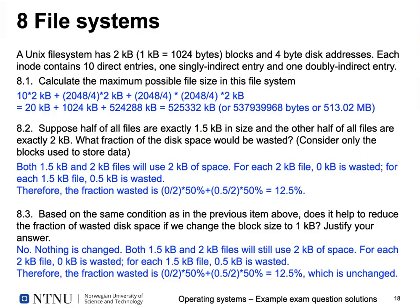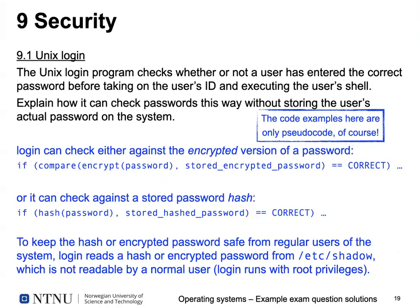Question nine was about security, starting with Unix login. We explained what Unix login does: it reads a password and username before logging you in. The question was: how can login check passwords without storing the actual password in clear text? Login can save only an encrypted version of the password, stored in /etc/shadow. Login encrypts the entered password and compares the encrypted versions. Alternatively, you could store the hash of the password and compare it against the hash of the entered password.